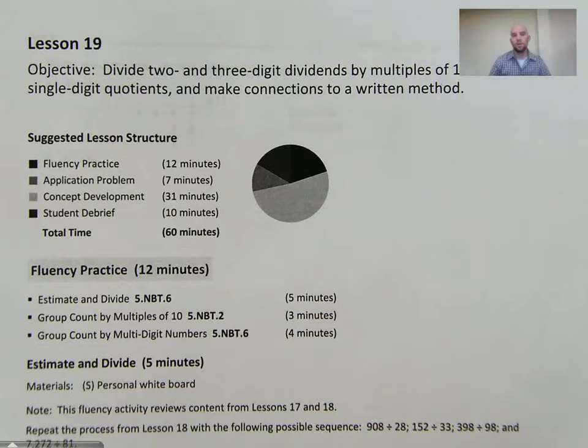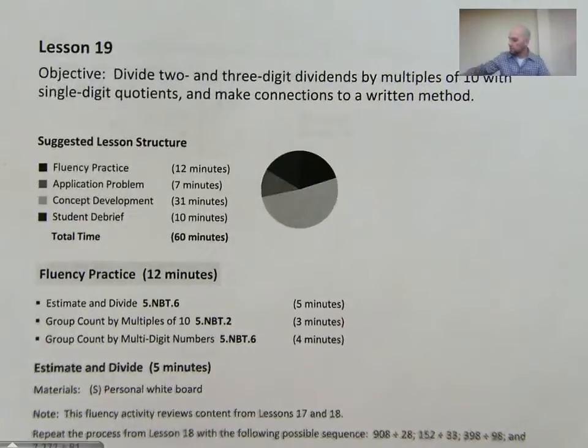Hello everyone, this is Mr. Kissinger. I'm with the Citizenship Academy in Syracuse, New York. And today we're doing 5th grade math, module 2, lesson 19. We're going to be dividing 2 and 3 digit dividends by multiples of 10 with single digit quotients and make connections to a written method. So we're going to be doing some division today.